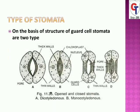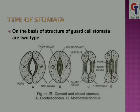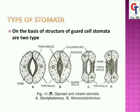Stomata are mainly present on the lower epidermis of the plant, because the maximum transpiration takes place on the upper surface. Hence the maximum number of stomata are present on the lower surface of the leaves.